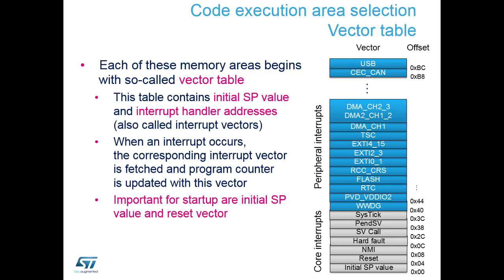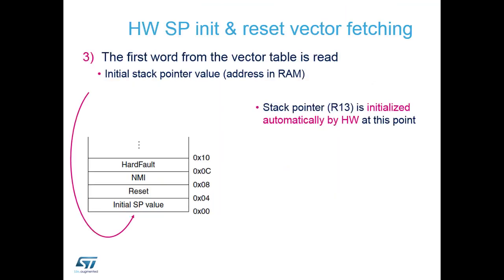Once memory is allocated, the vector table is loaded into address 0x0000. This contains various pieces of information needed to get the device running. The most important element is the first entry of the vector table: the initial stack pointer value. This is automatically transferred in hardware into ARM core register 13, configuring where the stack pointer will sit in RAM - the RAM location used when loading information onto the stack.